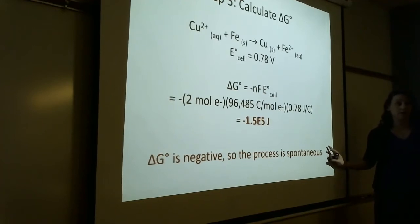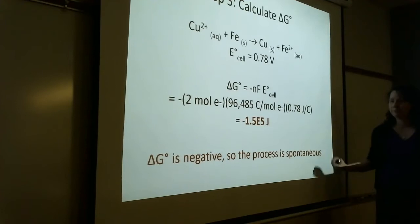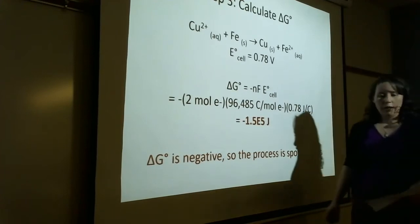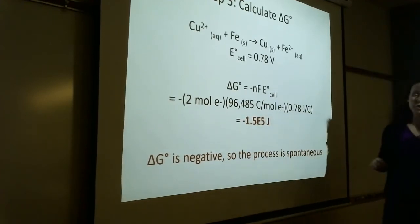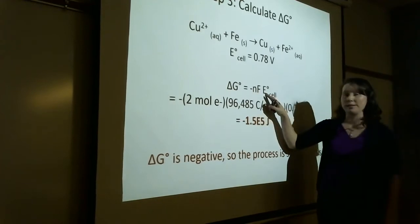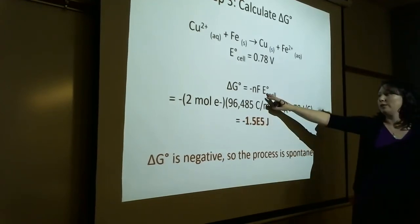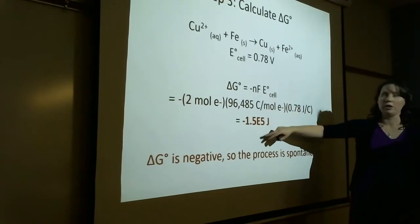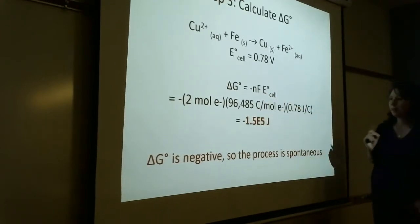A spontaneous cell is called a galvanic or voltaic cell. If you have a positive E-cell, you should always get a negative delta G, because the negative of a positive is a negative. If you have a negative E-cell, you get a positive delta G. So those two should always be opposite signs.